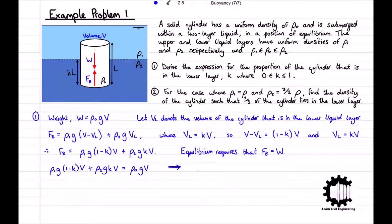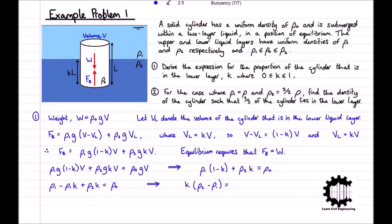Dividing each term by g V we get rho_1 times (1 minus k) plus rho_2 k equals rho_0. Expanding the brackets: rho_1 minus rho_1 k plus rho_2 k equals rho_0. Subtracting rho_1 from each side and factoring k gives k times (rho_2 minus rho_1) equals rho_0 minus rho_1. Finally, rearranging for k: k equals (rho_0 minus rho_1) divided by (rho_2 minus rho_1). This is the expression for the proportion of the cylinder in the lower liquid layer.